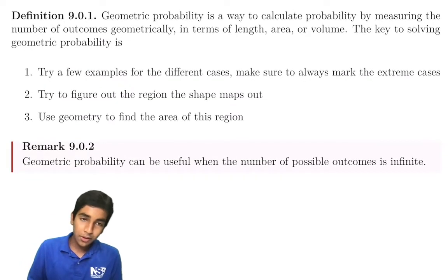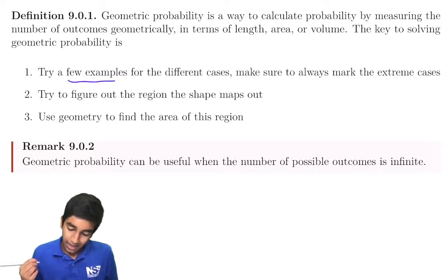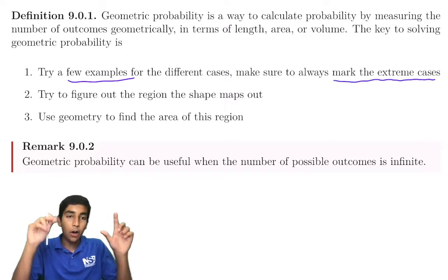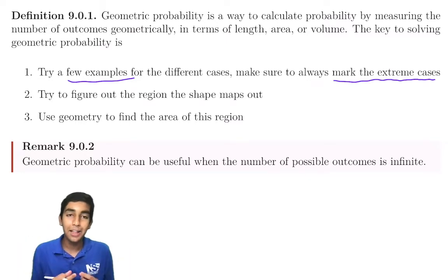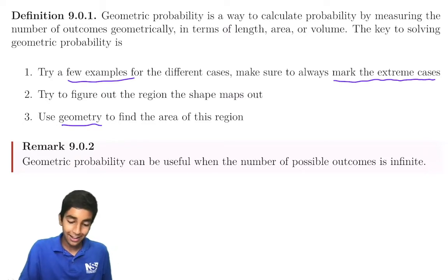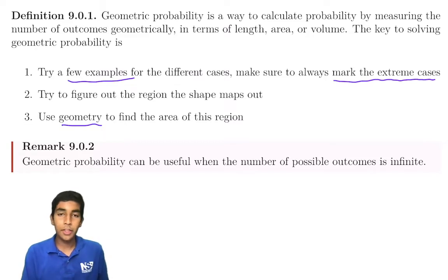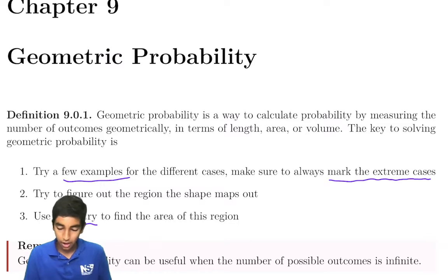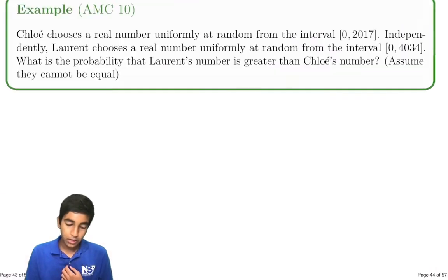So to do geometric probability, you try a few examples, and you always make sure to mark the extreme cases, because you're trying to find bounds so you can convert it to a geometry problem. And then use geometry, I know everyone's favorite subject, to find the area of this region. So it can be very useful when the number of possible outcomes is infinite. And that is a key thing, because we don't know how to count infinite possibilities. But geometric probability does, as we're about to see in this example.